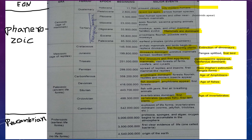Let's see what are the events of the Cambrian period. There was an explosion of life forms, and invertebrates were dominant — invertebrates like worms, jellyfish, and trilobites are dominant. So you have to remember that the explosion of life forms occurred in the Cambrian period.